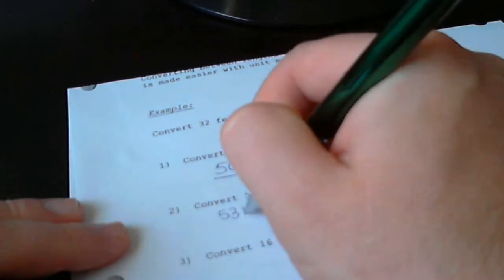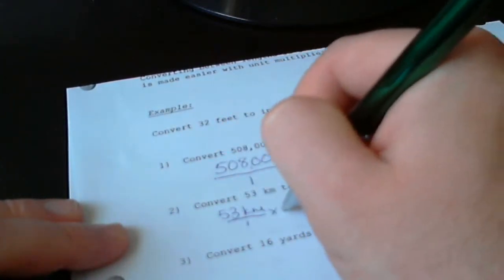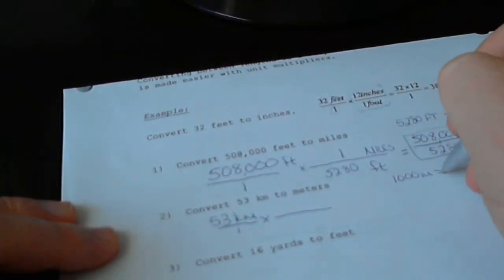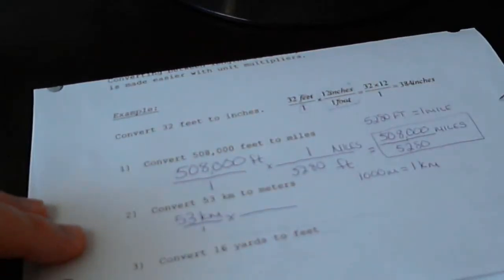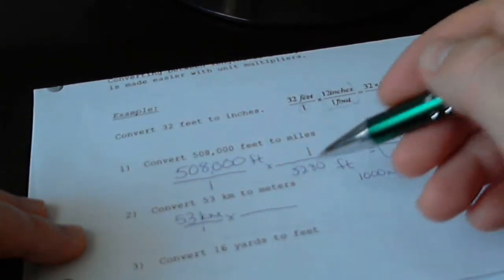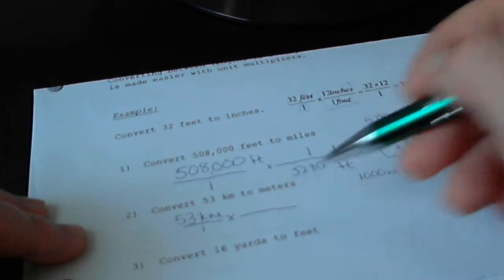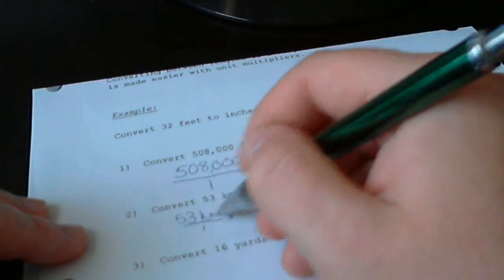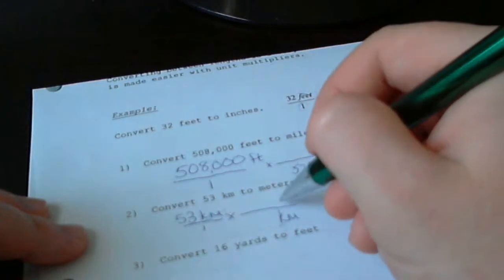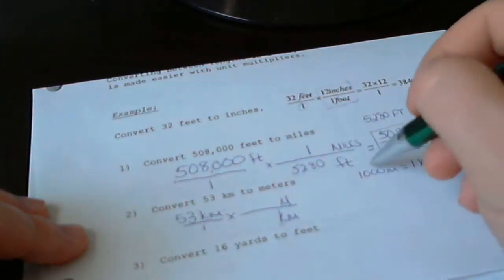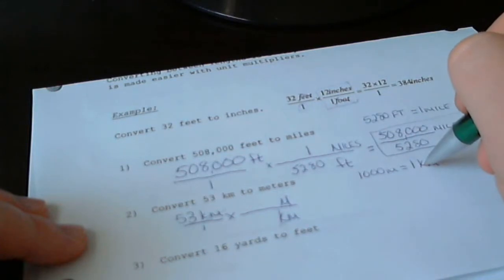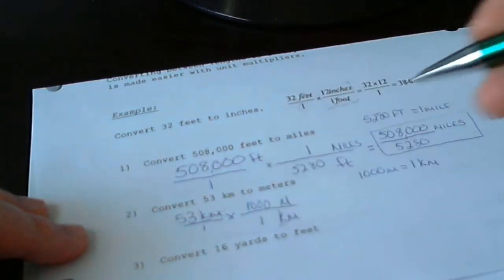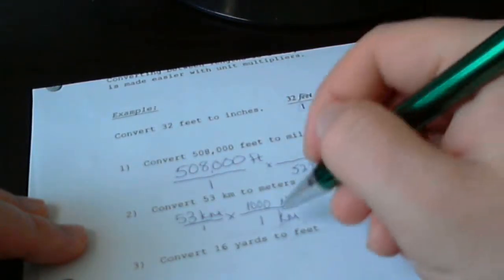Here's our next one: 53 kilometers to meters. There are 1,000 meters in one kilometer. This is going to be our unit multiplier. We're going to use it in this fraction. Kilometers are on top, so we know they have to go to the bottom of the next one because diagonals must cancel. I'm trying to get meters, so meters goes on top. When meters are with kilometers, 1,000 meters in one kilometer. Notice the 1,000 goes with the M, and the 1 goes with the kilometer.